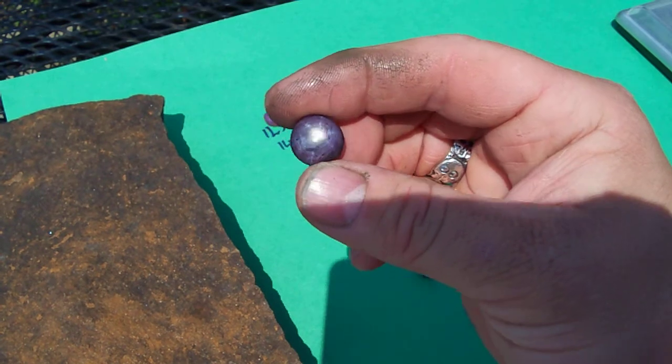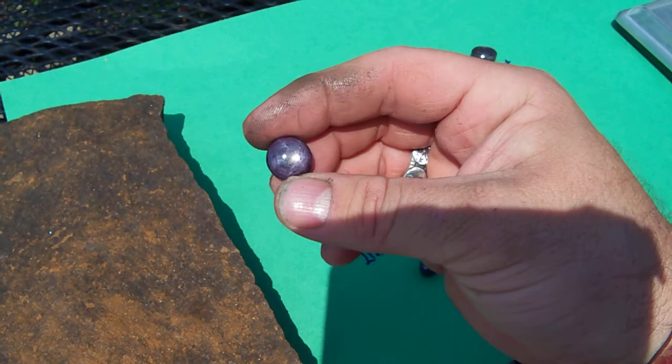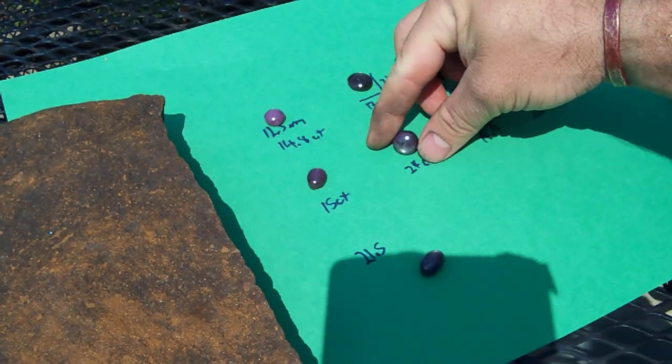This one here is a 24 carat stone. Really nice star, really good pattern in it. It's a nearly perfectly round stone.